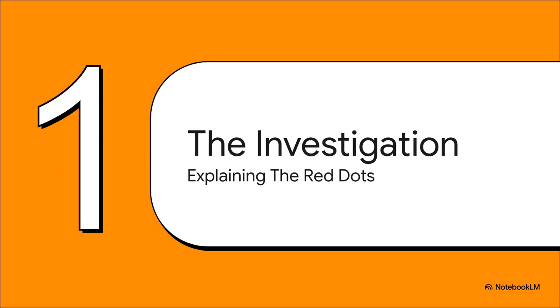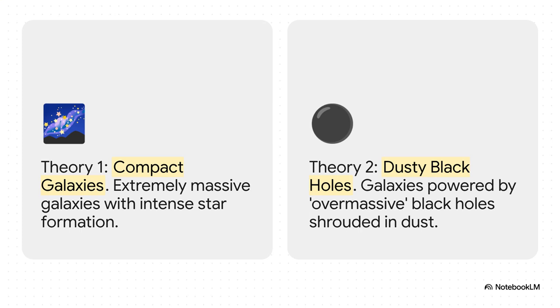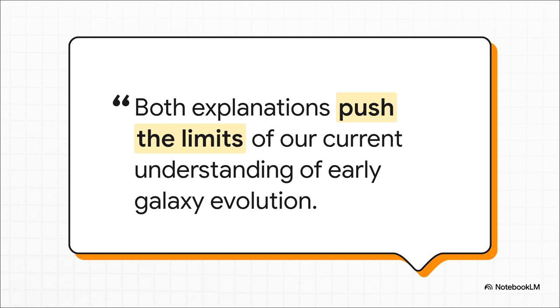This sent astronomers scrambling. Two main theories emerged. The first was that maybe these were super compact galaxies churning out stars at a mind-boggling rate - processes we've never even witnessed before. Theory number two: maybe they were galaxies powered by overmassive black holes at their center, but unlike the bright quasars we know, these would have to be totally hidden, shrouded in enormous clouds of dust. As astrophysicist Fabio Pacucci said, both explanations pushed the limits of our current understanding. Neither theory felt right - both required scientists to bend or maybe even break their models of how galaxies are supposed to work.